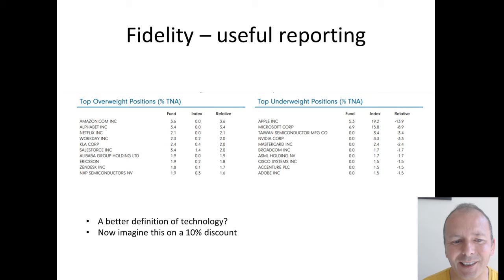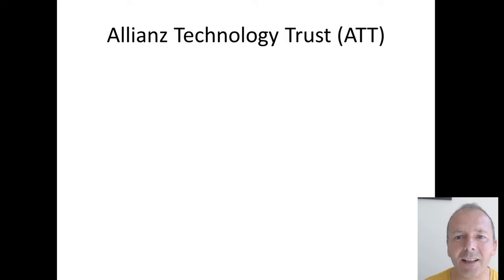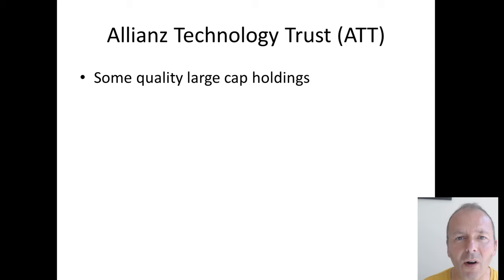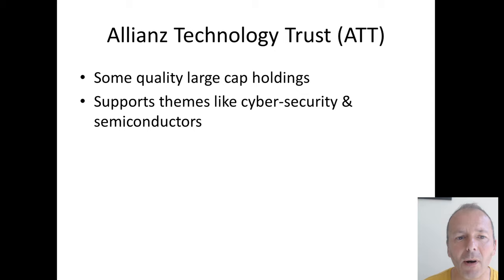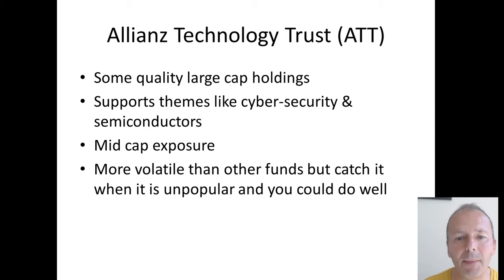Imagine you could get something like Fidelity but on a 10% discount to net asset value. Well, welcome to Alliance Technology Trust, which is an investment trust and you can just ride the price-to-net-asset-value cycle. It's got some quality large cap holdings, supports themes like cyber security and semiconductors, and has mid cap exposure. It's more volatile than other funds, but if you catch it when it's unpopular and at a low point in the cycle, you could do well — ultimately it will make new highs.